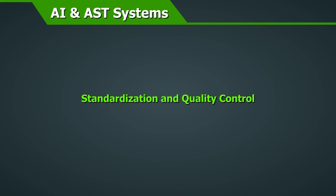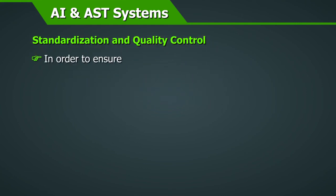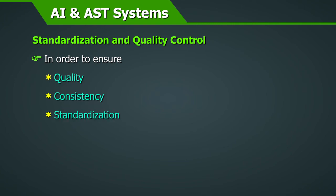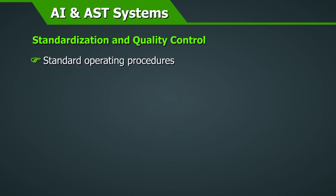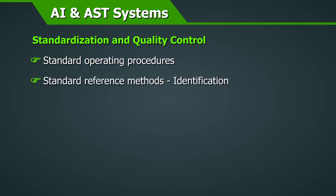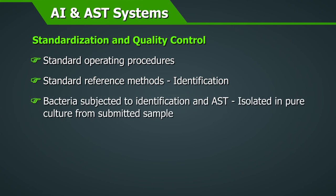Standardization and quality control of AST methods: In order to ensure quality, consistency, standardization, and comparability of antimicrobial identification and susceptibility testing methodologies, the following are required. Standard operating procedures must be prepared for these automated systems and followed by all staff. Standard reference methods should be used for identification so that the subject bacteria are consistently and correctly identified to the genus or species level. Bacteria subjected to identification and AST must be isolated in pure culture from the submitted sample.